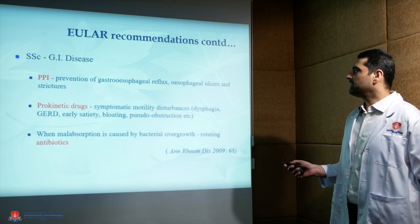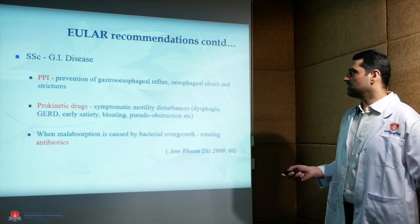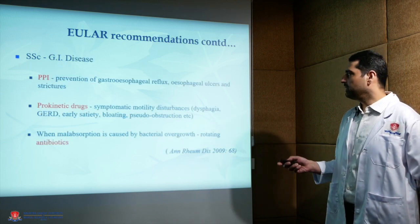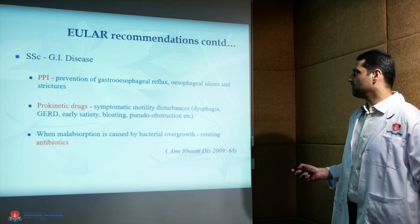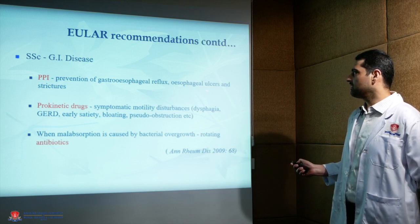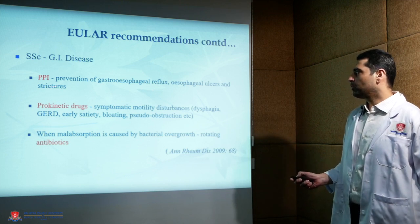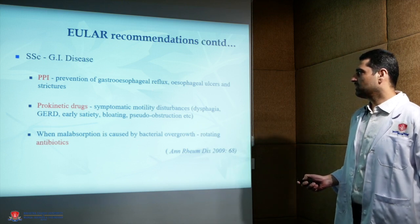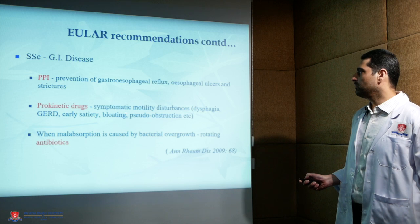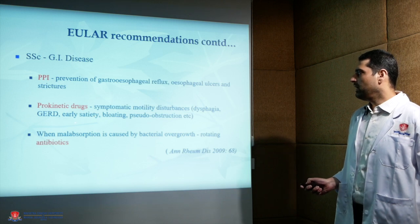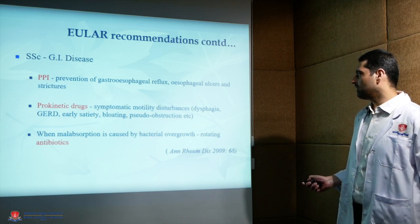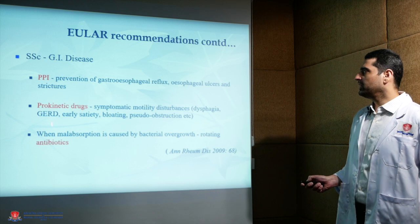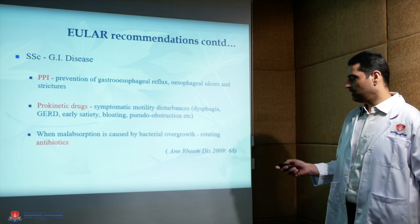For GI-related manifestations, proton pump inhibitors are used to prevent gastroesophageal reflux and ulcers, prokinetic drugs to stimulate motility, and when malabsorption is caused by bacterial overgrowth, rotating antibiotics must be used.